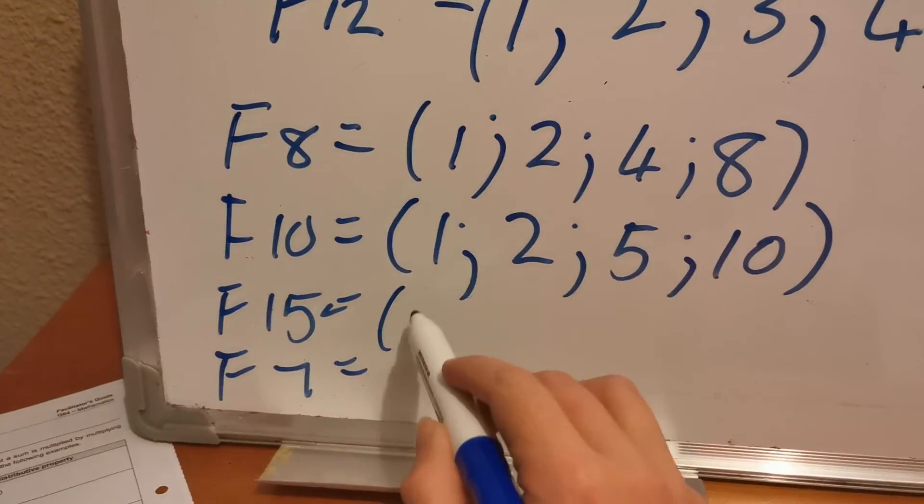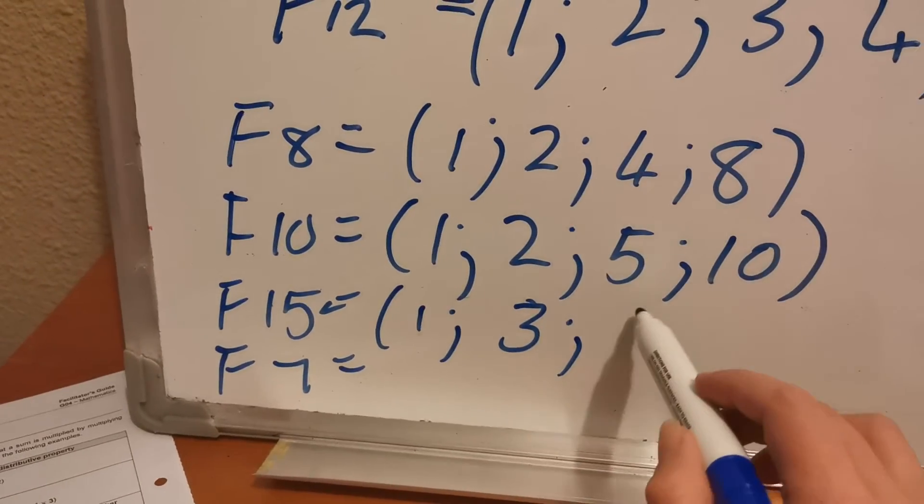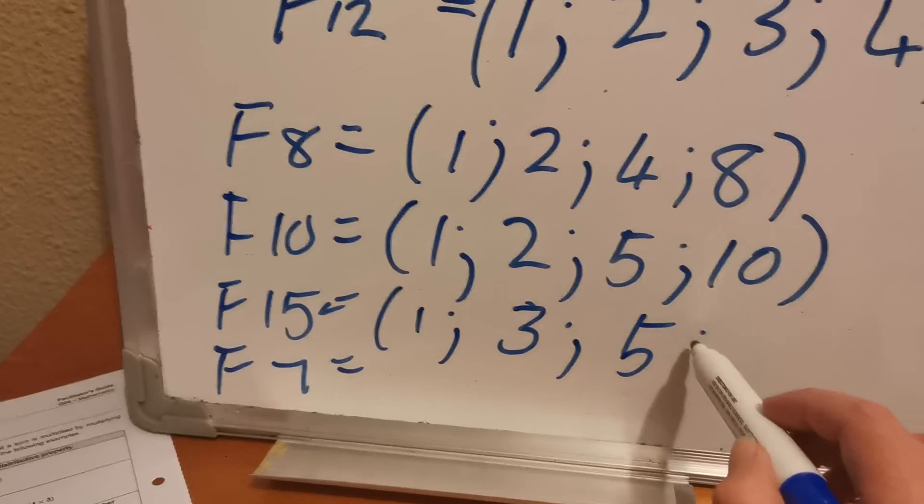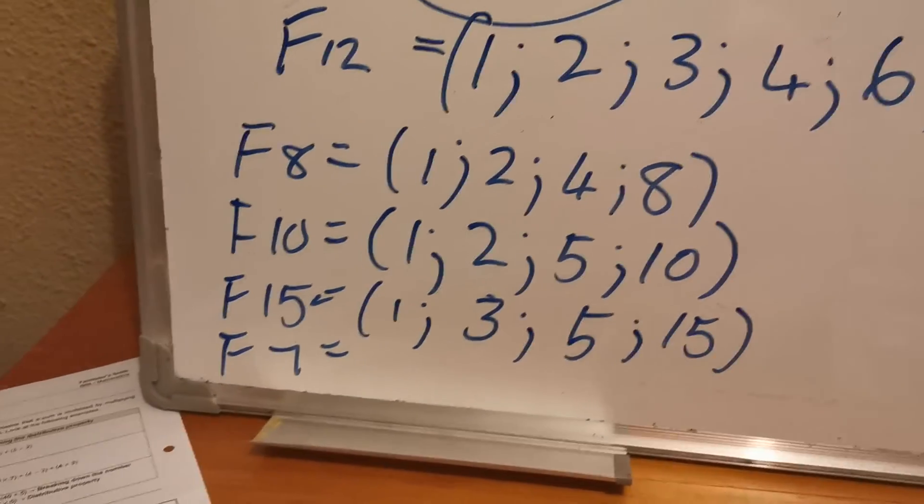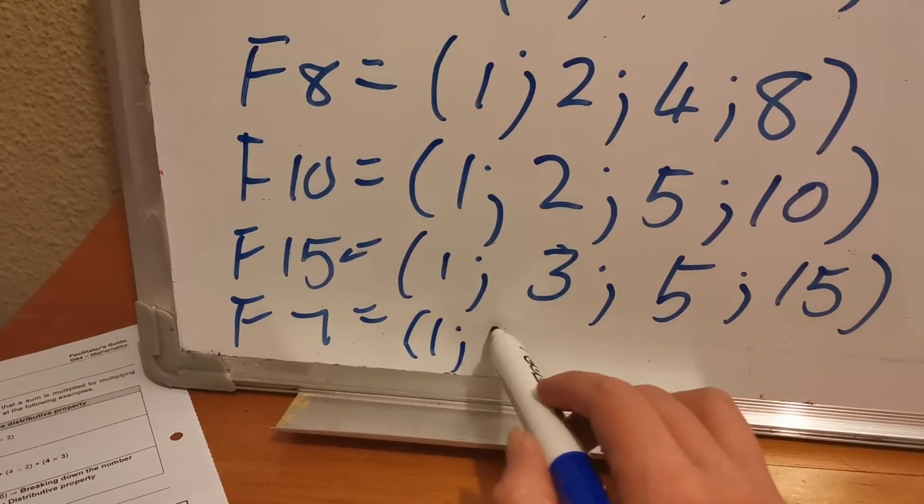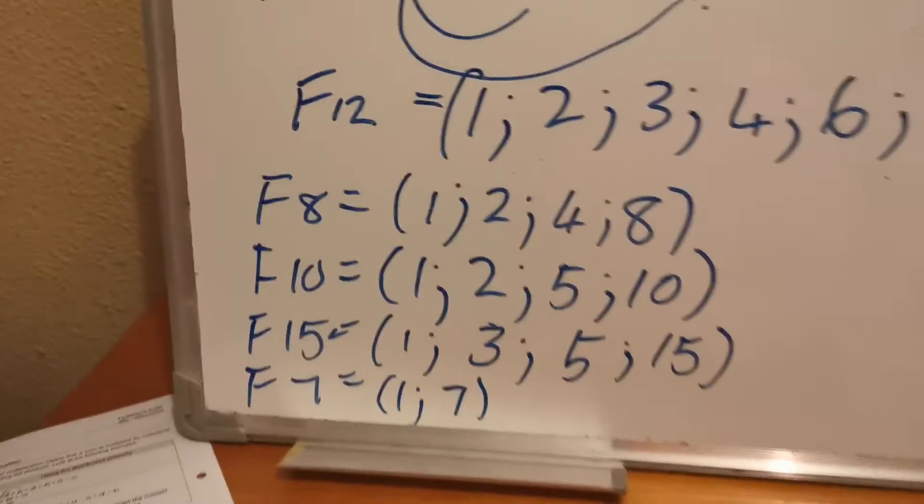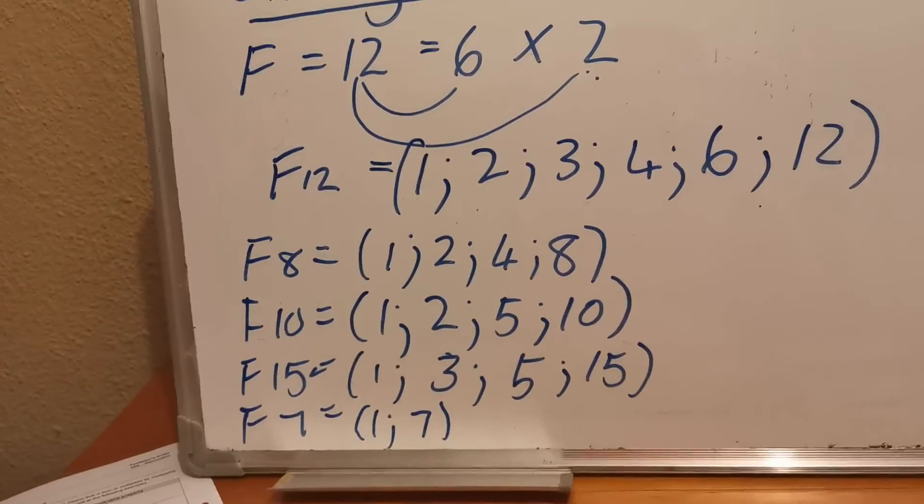The factors of 15 will be 1, 3, 5, and 15. And the factors of 7 will only be 1 and 7. 7 can't be divided by any other number without a remainder.